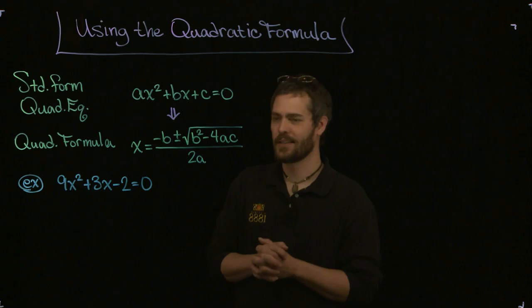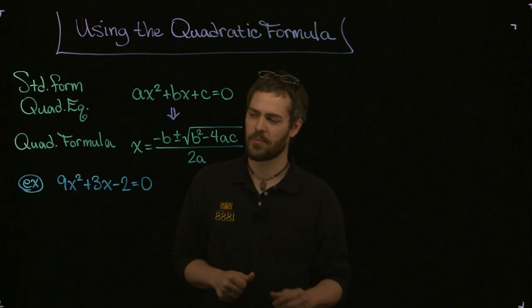So here it is. I'm going to show you how to use it. Here's an example we can start with: 9x squared plus 3x minus 2 equals 0.